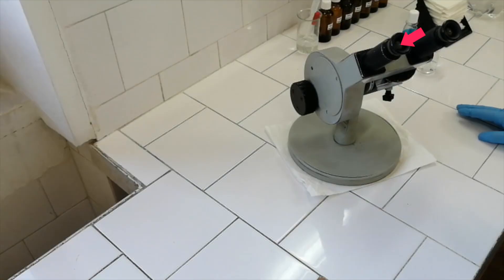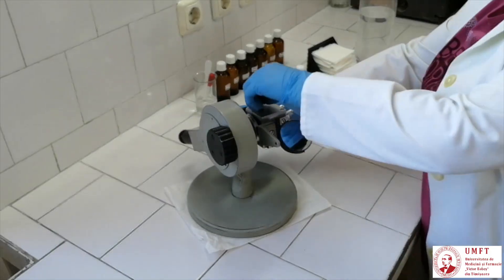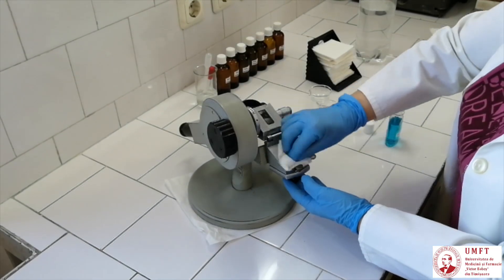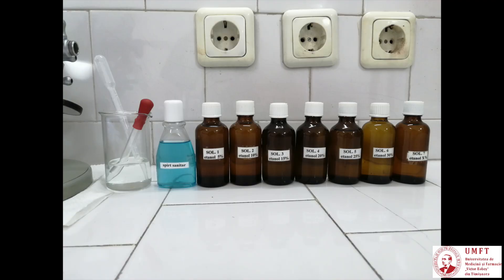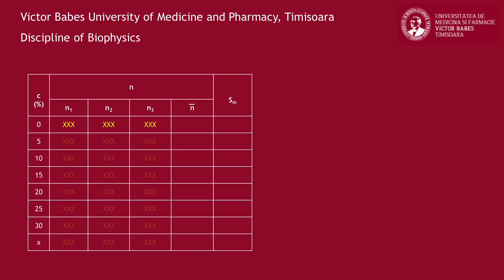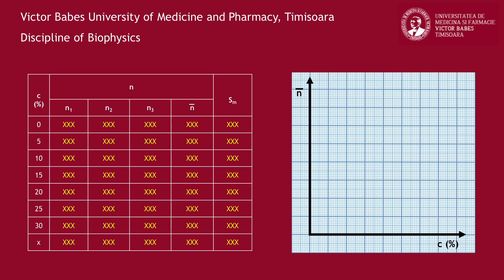Look through the reading eyepiece and read the refractive index three times. Rotate the refractometer to the upside-down position, separate the two prisms and clean their surfaces with alcohol. Use the previously presented steps and measure the refractive indices for all the studied solutions. Record all determined values in the table of your book. For each solution, calculate the mean value of refractive index and the associated standard error. Using millimeter paper, plot the mean values of refractive index as a function of concentration. Finally, by linear interpolation, determine the unknown concentration of the studied solution.